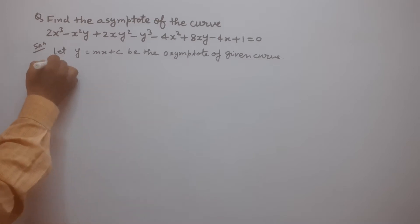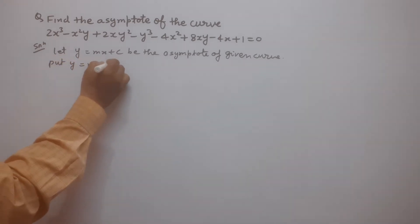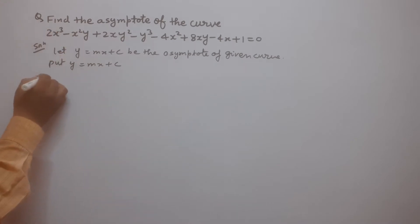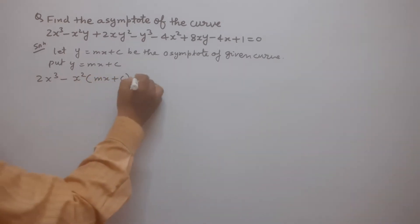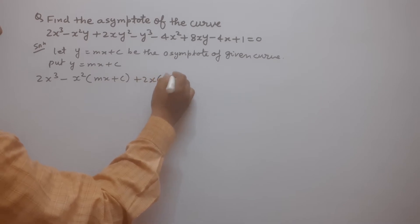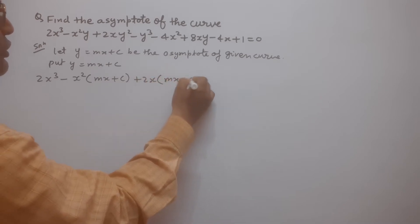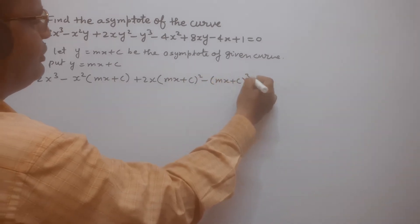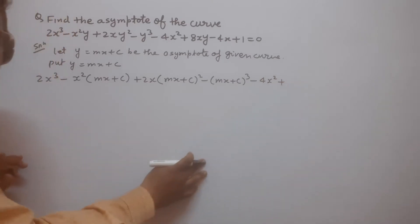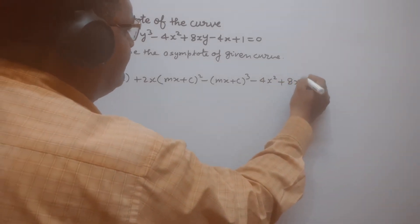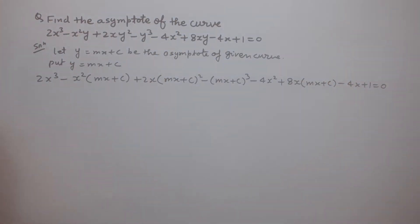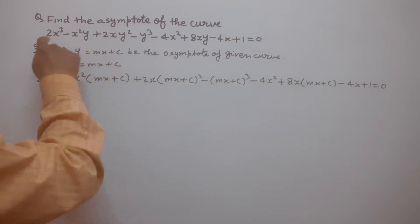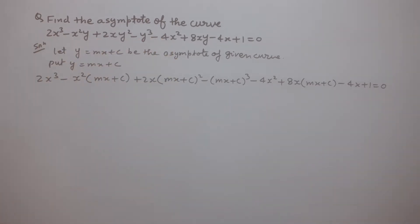Now we put y = mx + c in the above equation of the curve. So we write: 2x³ - x²(mx + c) + 2x(mx + c)² - (mx + c)³ - 4x² + 8x(mx + c) - 4x + 1 = 0. So we put mx + c in place of y in the algebraic equation of the curve.